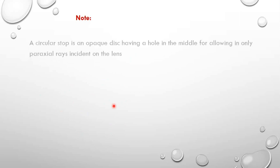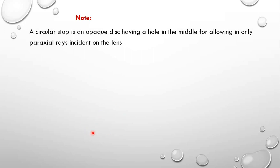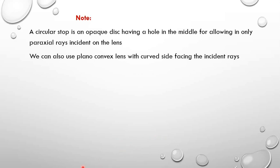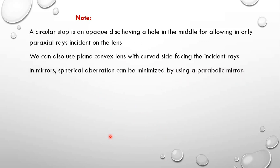To note: the circular stop used to minimize spherical aberration is an opaque disc having a hole in the middle, allowing only the paraxial rays to be incident on the lens. We can also use a plano-convex lens with the curved side facing the incident rays. For mirrors, spherical aberration can be minimized by using parabolic mirrors instead of ordinary curved concave mirrors.